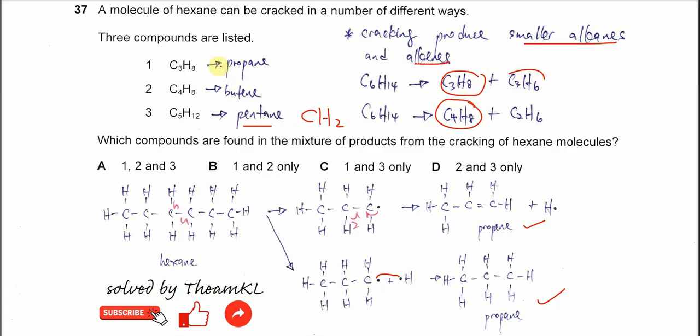Of course it can form propane, but it's not in the choice. So therefore propane and butene can be formed, but pentane cannot be. So the answer is B.